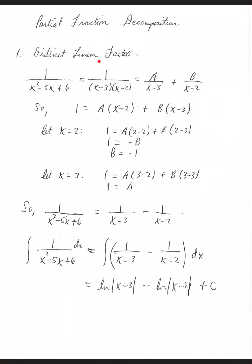Focusing on this part, if you multiply both sides by x minus 3 times x minus 2, you will get 1 equals A times x minus 2 plus B times x minus 3. Now, to solve for A and B, which will eventually be the numerators for the original problem's decomposition, we can pick values of x.